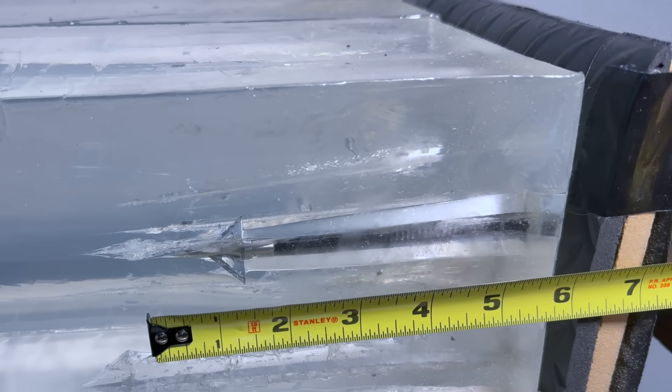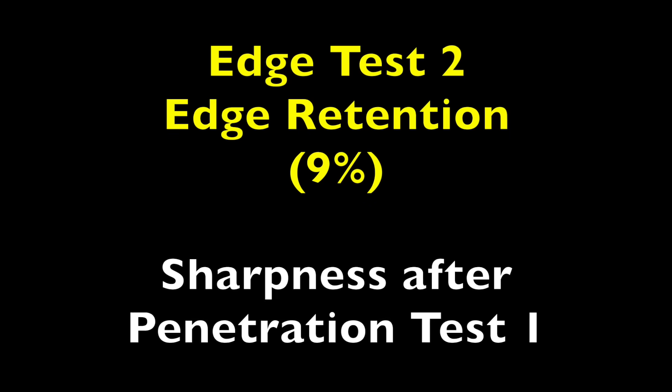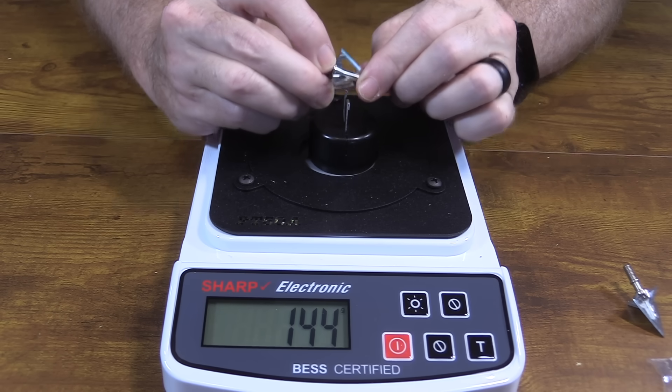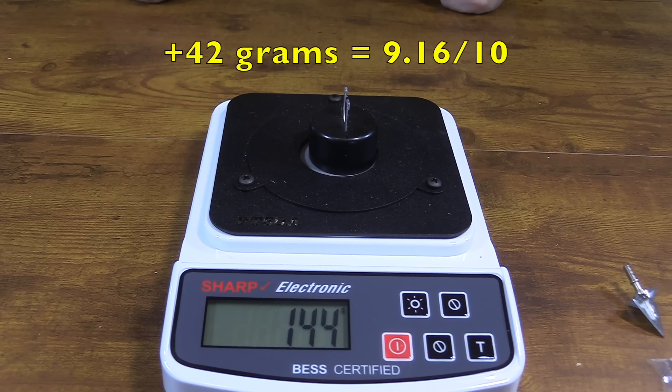It penetrated 7 and a half inches. It took an additional 42 grams of force to cut through the wire, which is a 9.16 on a 10-point scale. And it's going to get a 2-point bonus for both the sharpness and the edge retention, being under the threshold of 200.